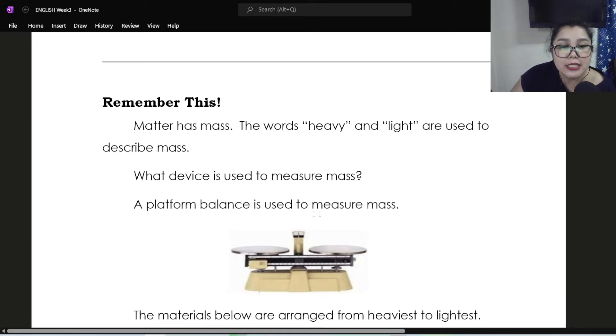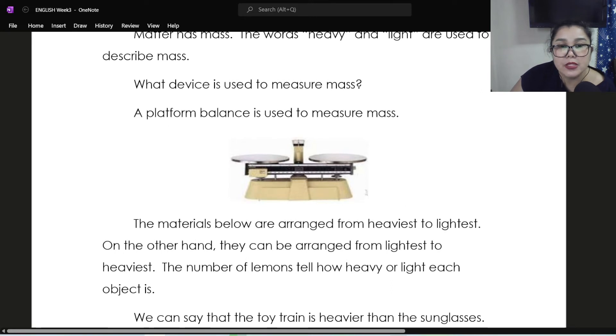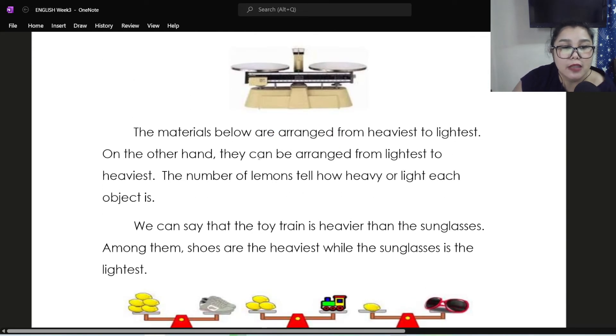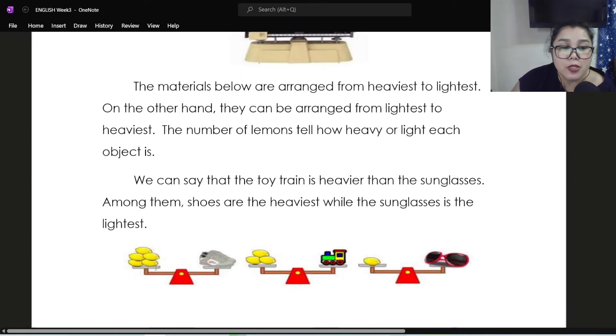A platform balance is used to measure mass. So if we had face-to-face, I would show you a platform balance inside the science laboratory. There are weights that you place. And then there's a pointer. If it's pointing at the middle, it means it's of equal mass. So however many weights are there, then that's also the mass. The materials below are arranged from heaviest to lightest. On the other hand, they can be arranged from lightest to heaviest.